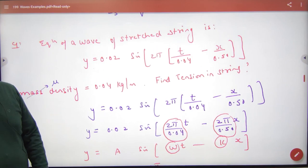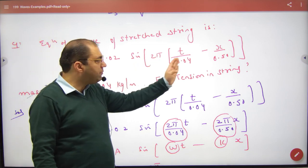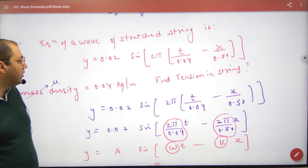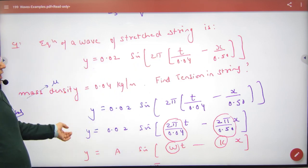The wave equation is given as follows. 2pi is outside - multiply and expand it. You have mu given, but tension is missing. This is what the question asks.